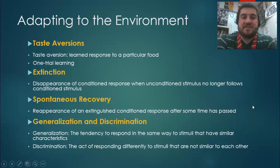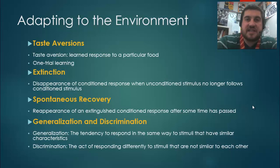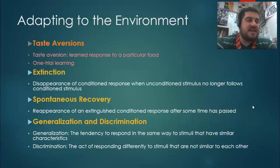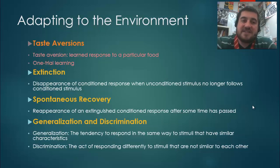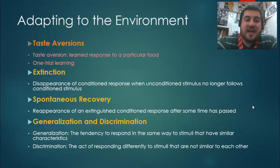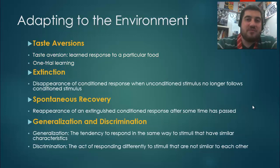Now let's go over taste aversions and how classical conditioning can actually help people and animals. A taste aversion is a learned response to a particular food. For example, I once got food poisoning from a hot hamburger at Dairy Queen and was throwing up for days. It took me one time — the consequences were so awful that I just don't want to go through that again. So I don't eat Dairy Queen hot food anymore, though cold food is fine.